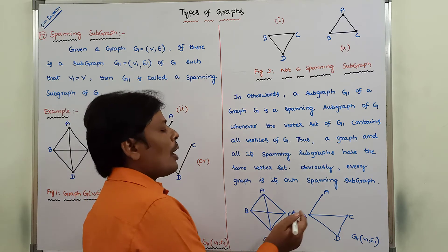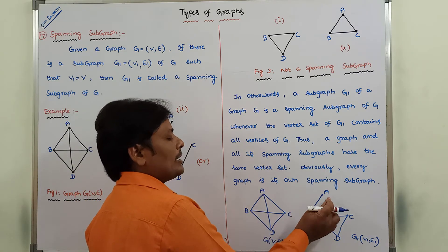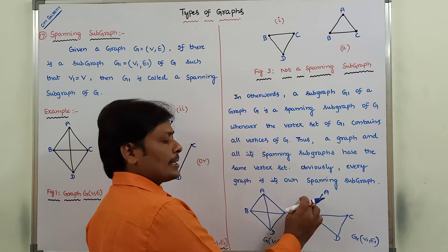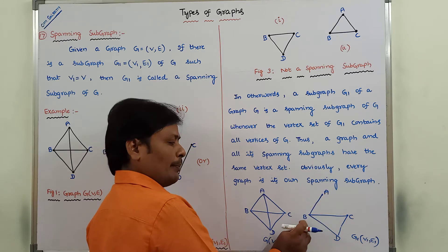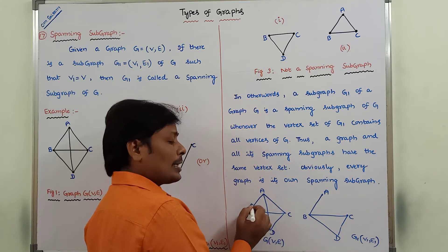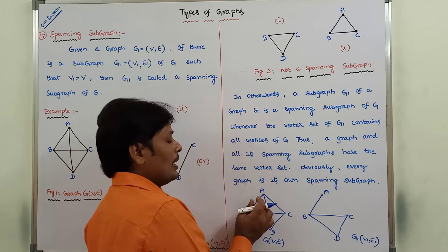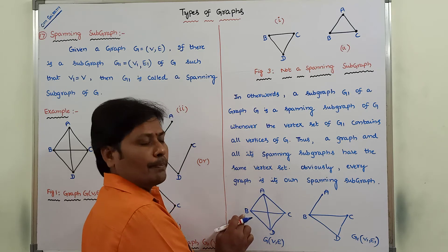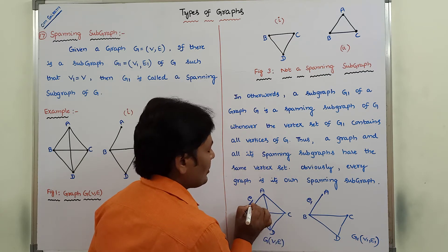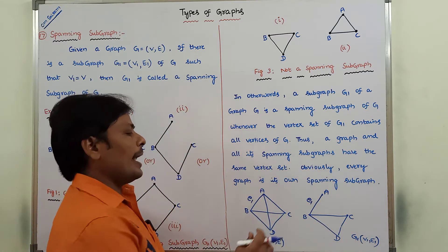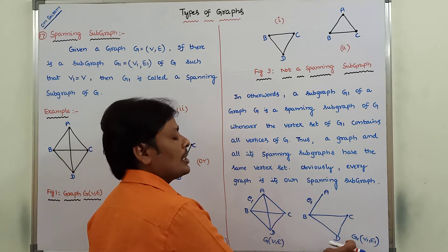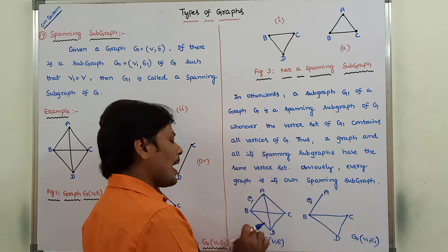Now we can take the first edge A, B. What are the end vertices of this edge? Here A, here B. Consider this edge in G — what are the end vertices? Here A, here B. Suppose this is edge E1 in G1 and this is also edge E1 in G. The same end vertices for edge E1 in G1 should also be there in G.